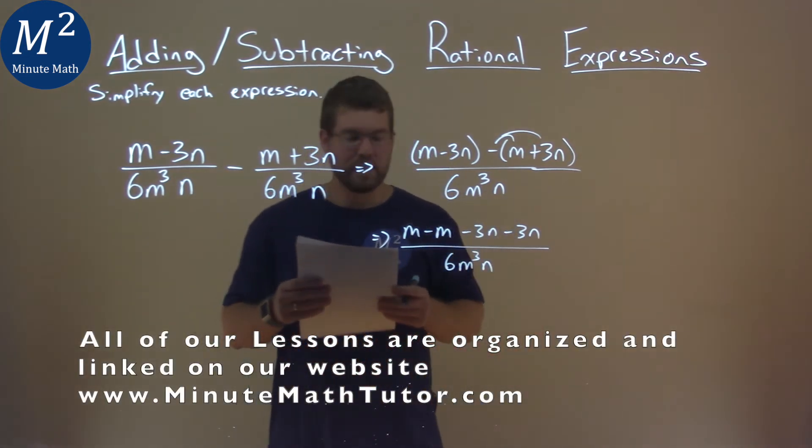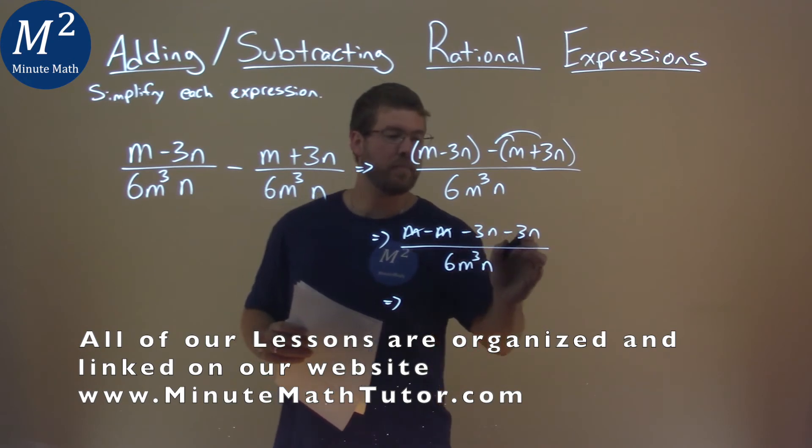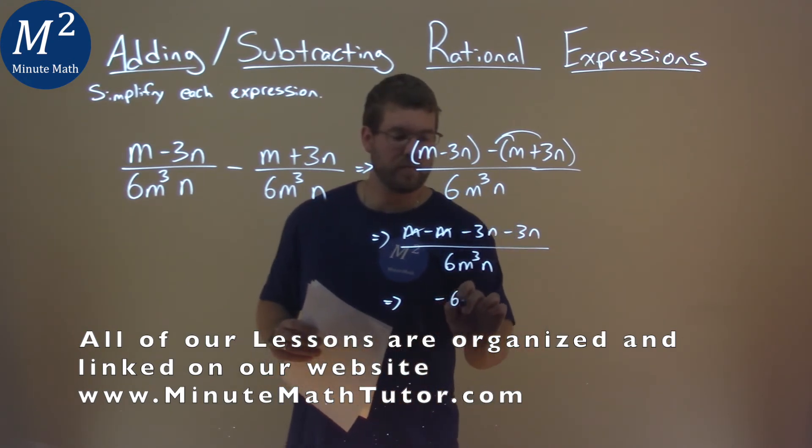Well, combining our like terms again, we have m minus an m cancels each other out, it's going to be zero. So we have negative 3n minus 3n, which is a negative 6n in the numerator.